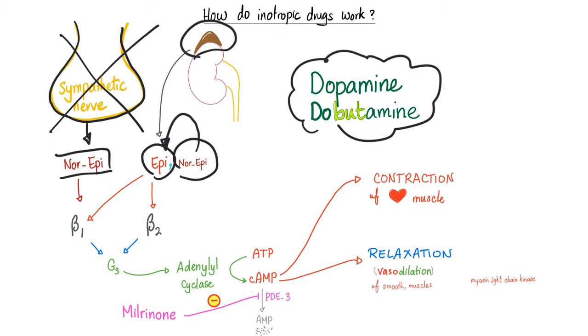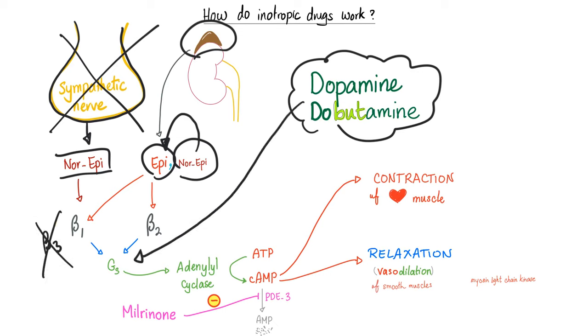Norepinephrine stimulates beta-1. Epinephrine stimulates beta-1 and beta-2. Beta-1 and beta-2 are both Gs-coupled — beta-3 as well, but no one worries about beta-3 right now. Beta-1 and beta-2 are Gs-coupled. As for stimulation, let's stimulate adenylate cyclase. When you stimulate adenylate cyclase, you convert ATP into cyclic AMP — the second messenger.